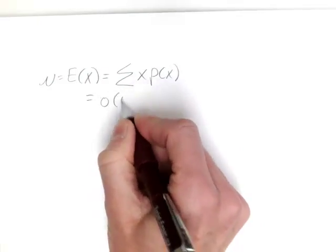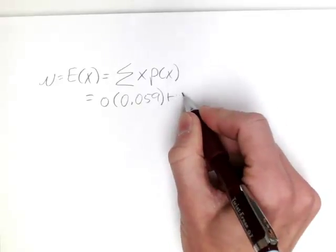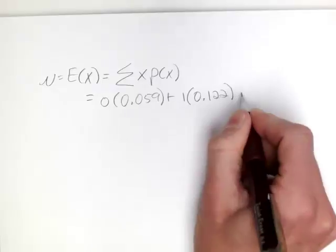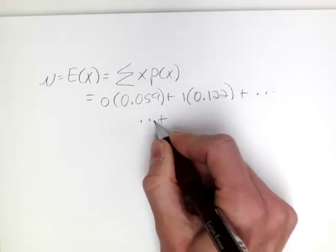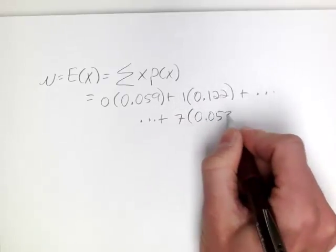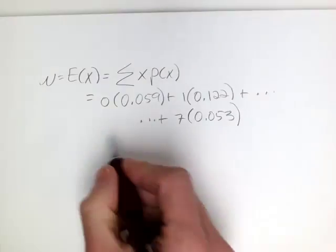So for this particular problem, it would be 0 times the probability of getting a 0 plus 1 times the probability of getting a 1, and so on, all the way down to 7 times the probability of getting a 7. So that's very clunky and cumbersome.